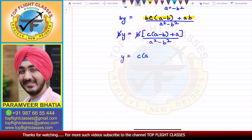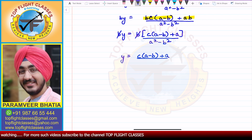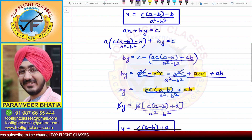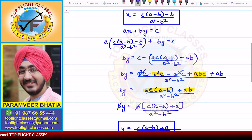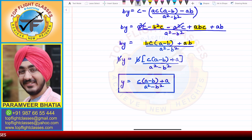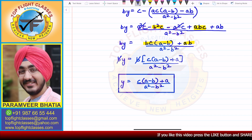So we get y equal to c times (a minus b) plus a, divided by a-squared minus b-squared. And x is equal to c times (a minus b) minus b, divided by a-squared minus b-squared. These are our final answers, which is what is asked of us in the question.